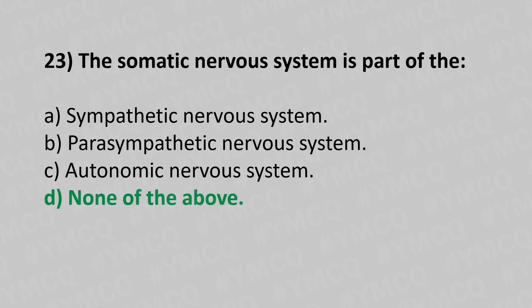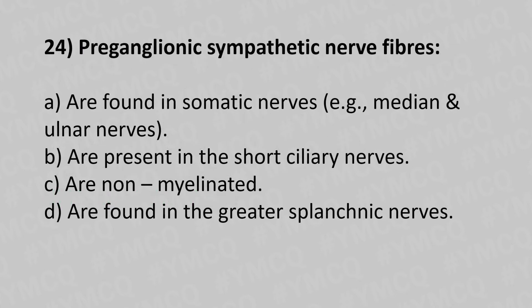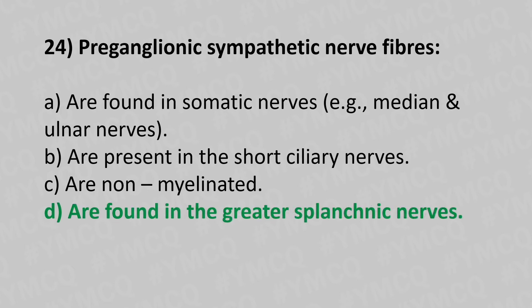Question 24: Preganglionic sympathetic nerve fibers — Option A: are found in the somatic nerves (e.g., median and ulnar nerves). Option B: are present in the short ciliary nerves. Option C: are non-myelinated. Option D: are found in the greater splanchnic nerve. The answer is Option D — are found in the greater splanchnic nerve.